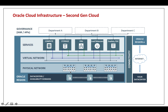On top of the physical network, Oracle introduced a virtualization layer — and this is a game-changer. Instead of virtualization sitting on the server side, they moved it onto the network layer. This is called off-box virtualization. The result is the VCN, or Virtual Cloud Network, which is a software-defined version of a traditional network, including subnets, internet gateways, and routing tables. With this approach, you can connect different device types — Exadata machines, bare-metal servers, and virtual machines — all on the same network.